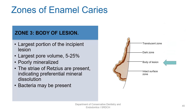The third zone is the largest zone and it is the body of the lesion. It has the largest pore volume of 5 to 25%. You can see evidence of demineralization and striae of Retzius are present, which shows that the organic component is still intact while the mineral dissolution is taking place. There may be bacteria present in this zone.